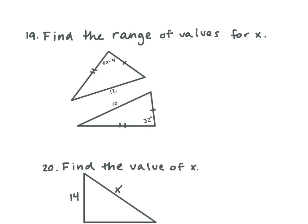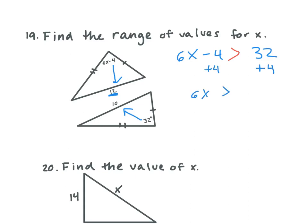Number 19 — find the range of values for x. How do we set this up? 6x minus 4 is greater than 32, because 6x minus 4 is across from the angle of 12, and 32 is across from 10. Since 12 is bigger, the sign in the middle needs to be greater than. So we add 4 on both sides: 6x is greater than 36, and x is greater than 6.